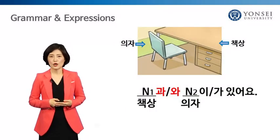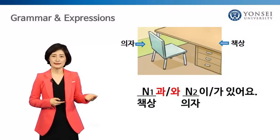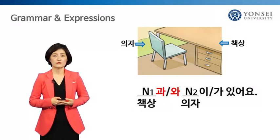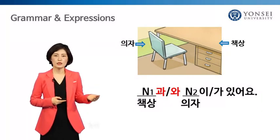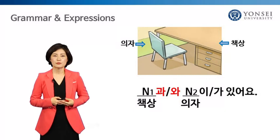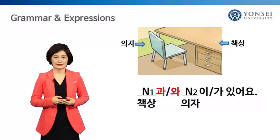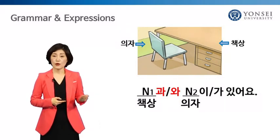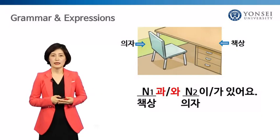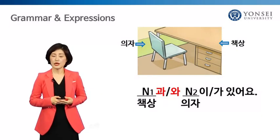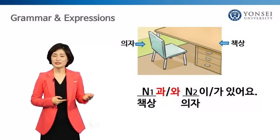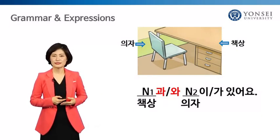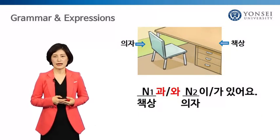Usually, when a noun ends with a consonant, we add a particle starting with a vowel. And when the noun ends with a vowel, we choose the particle that begins with a consonant. However, in the case of 과, 와, it's the other way around. Now let's make a sentence using 과, 와.